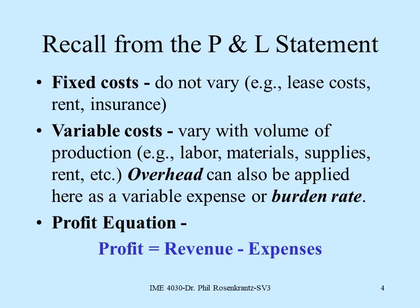On slide number four, we're reviewing a couple of things from the profit and loss statement because these are the elements of the breakeven analysis. Fixed costs are items that don't vary throughout the year. Variable costs are items that vary with our volume of production — we mentioned labor, materials, and supplies. Another variable cost is called overhead, which is an allocation of things like utilities, heat, water, and light. Those expenses are often added up and allocated to various products using a technique called a burden rate, which allocates overhead expense to each hour of labor.